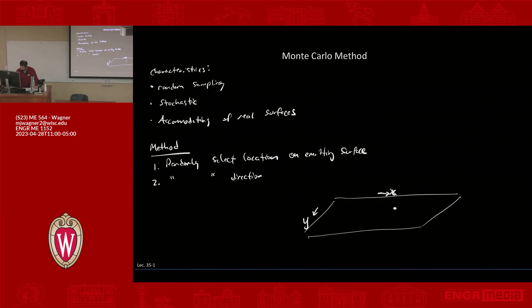Step two would be randomly select direction. So now if I pick some ray that's going to go off, it's going to be at an angle.